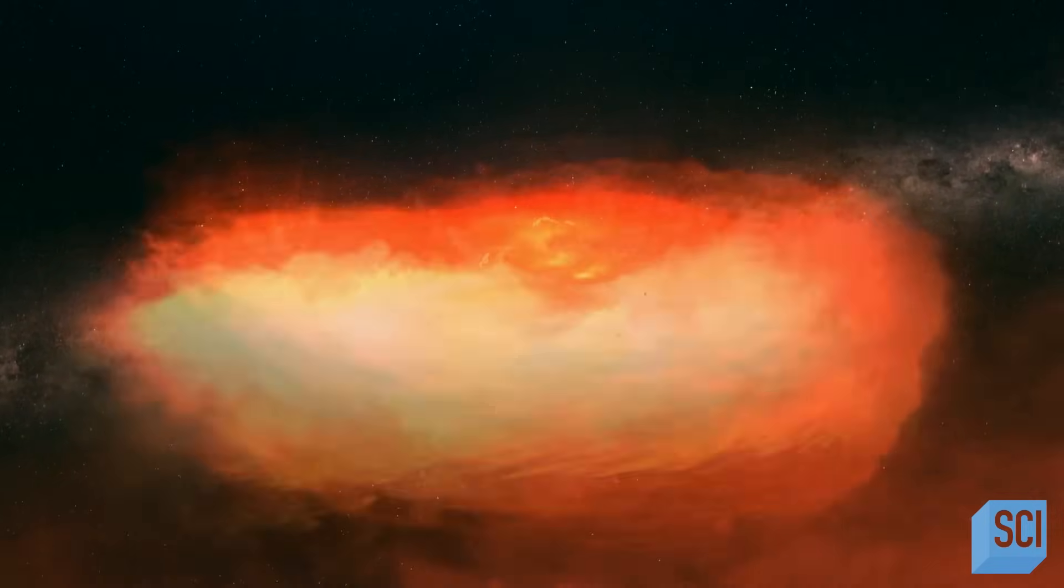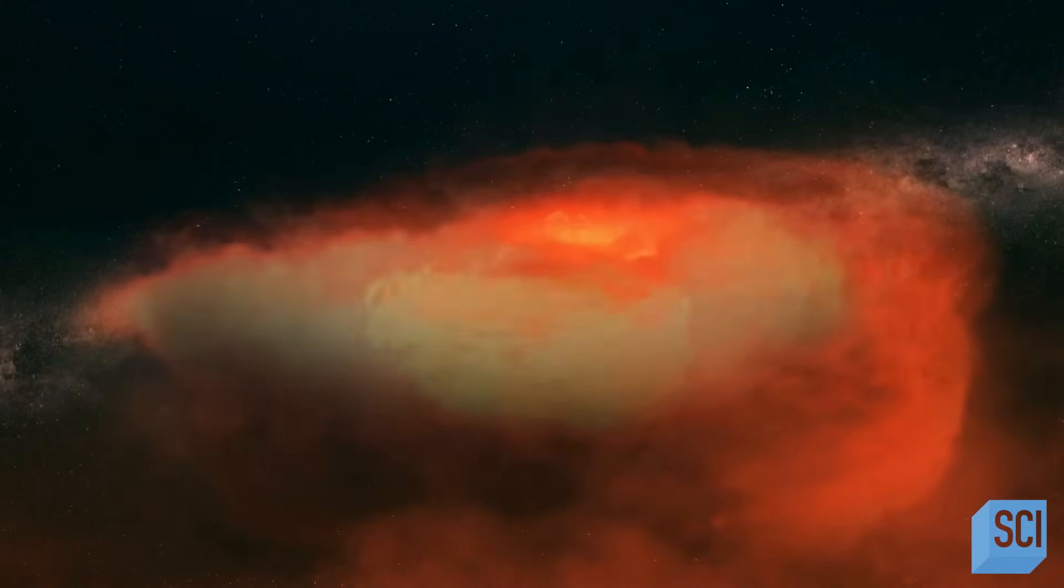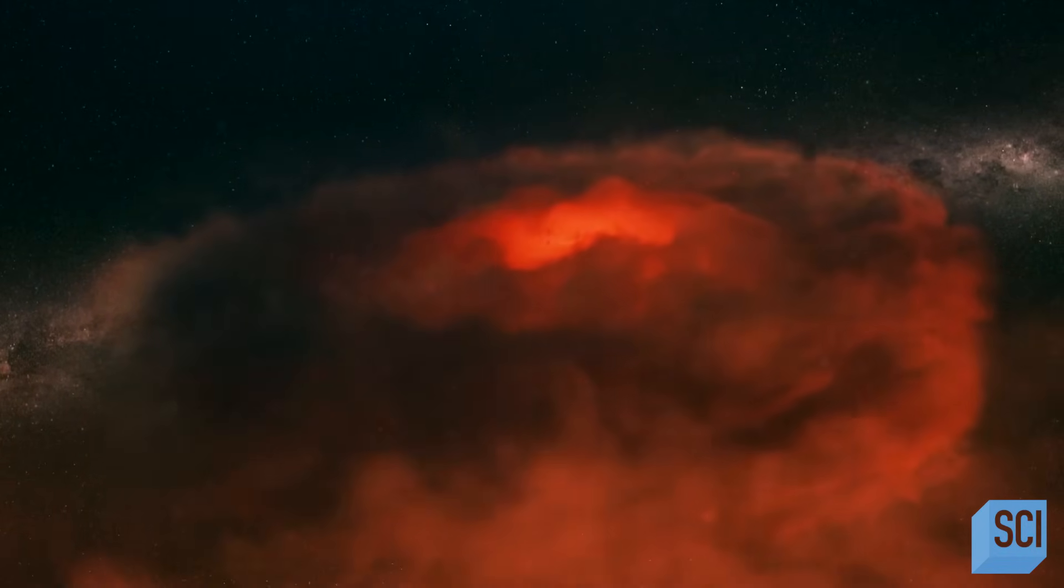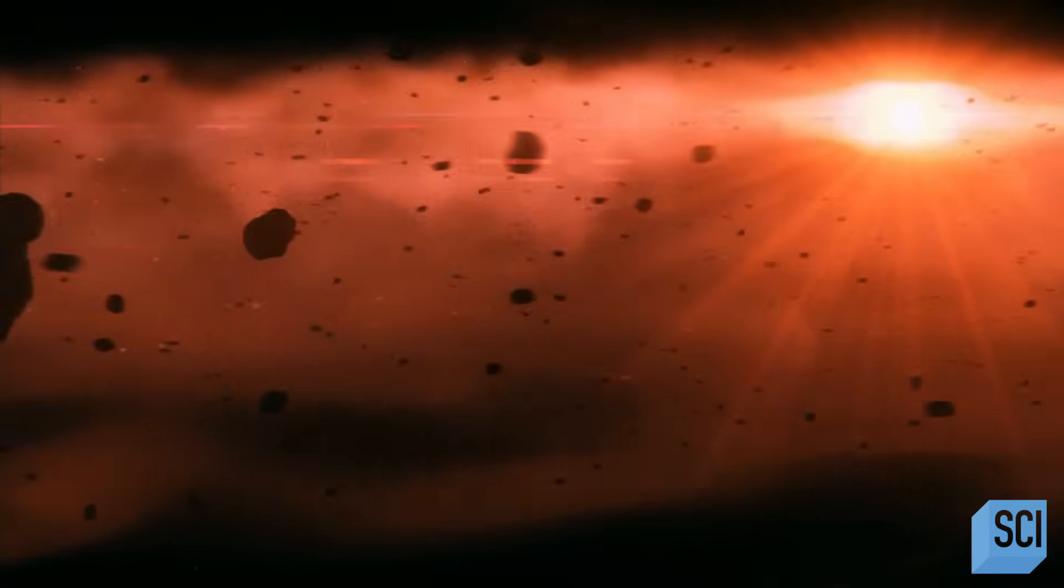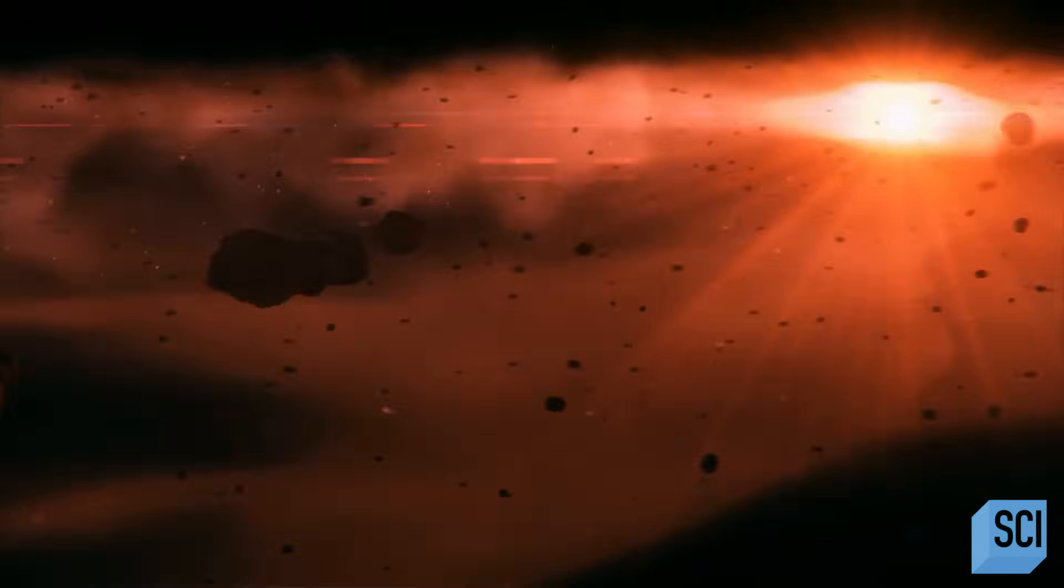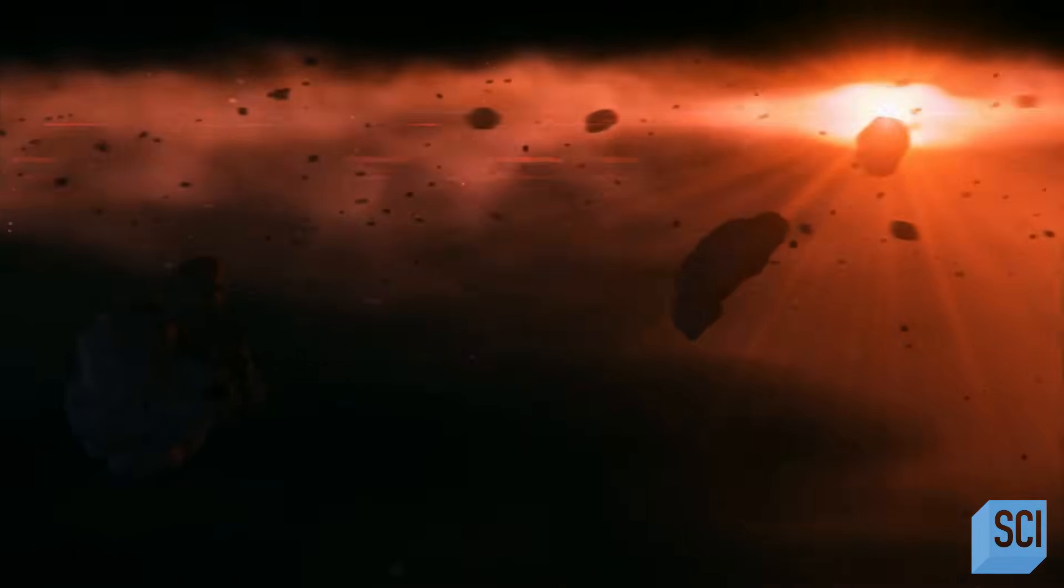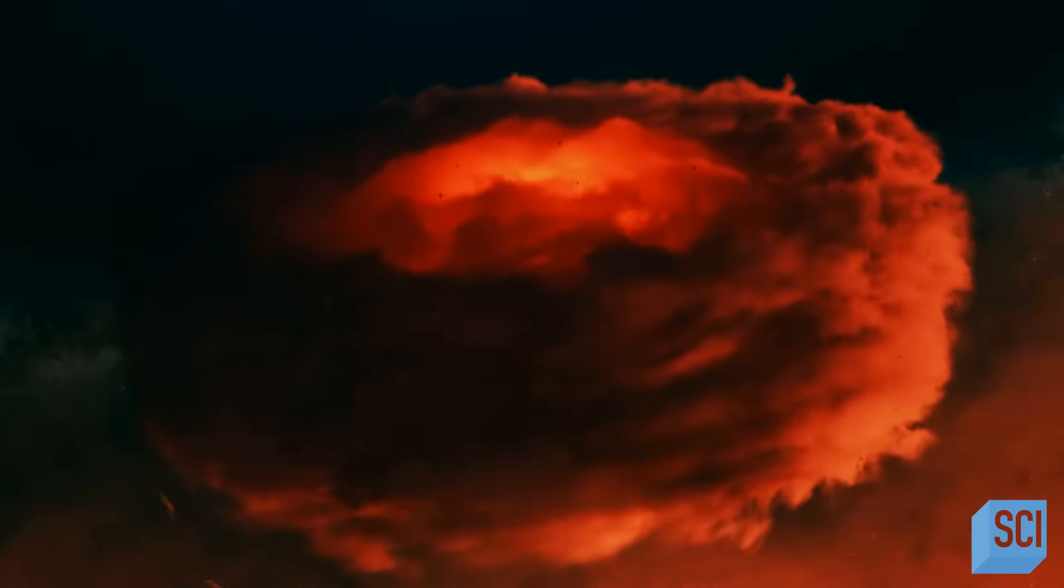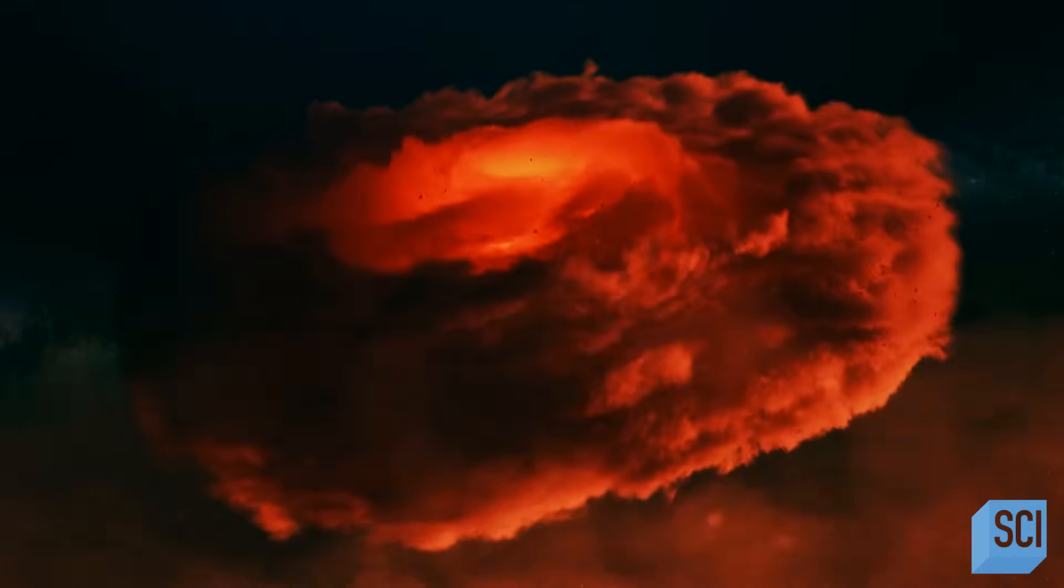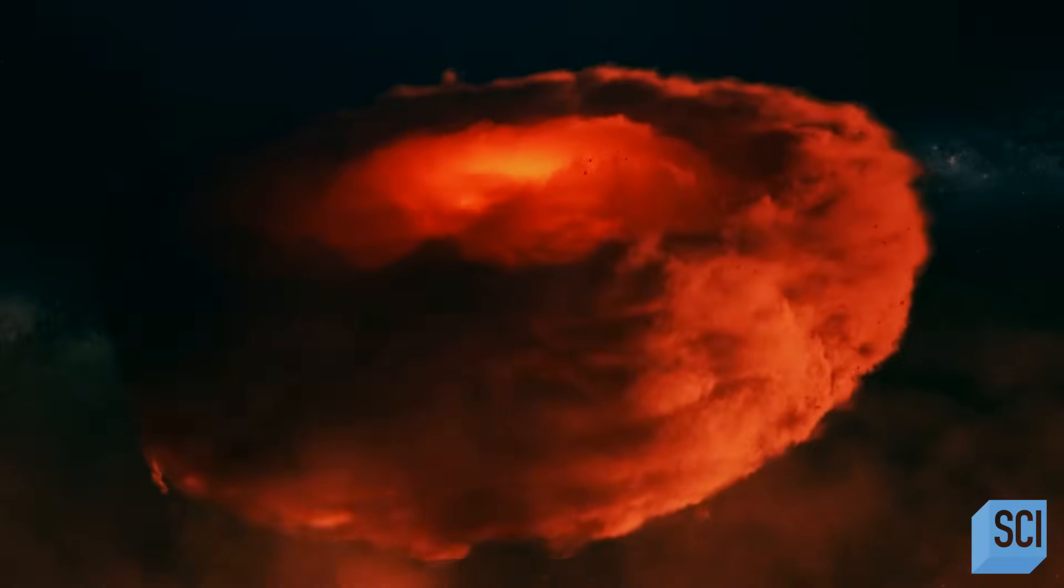A synestia is a donut-shaped spinning ring of molten and vaporized rock. The impact that formed it released so much energy, the synestia could have glowed as bright as the sun. The surface of the structure that you observe would be magma rain clouds. And so it would be glowing orange hot and it would look like a swirling ball of gas.